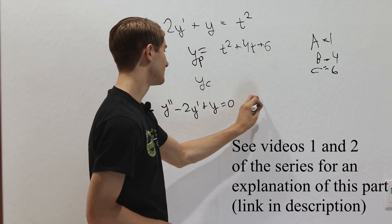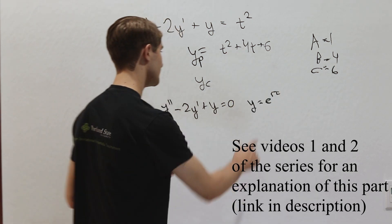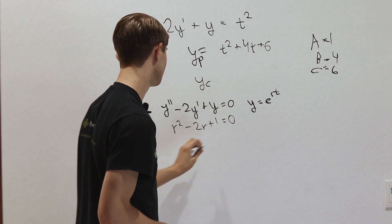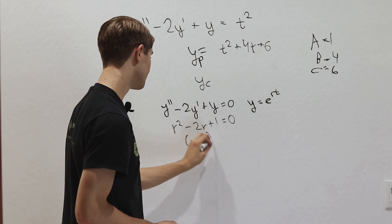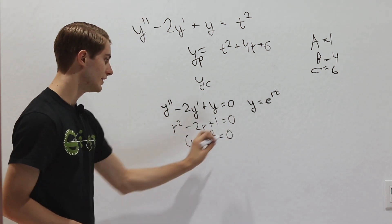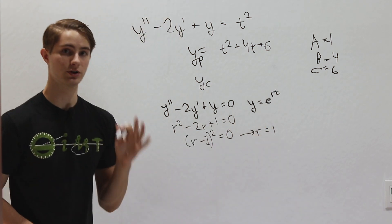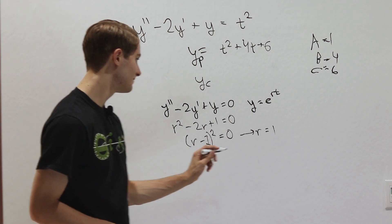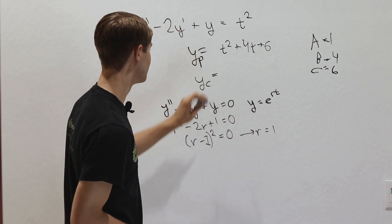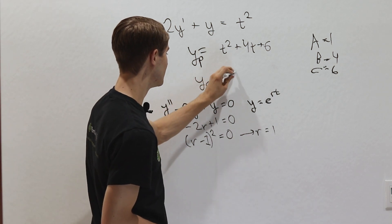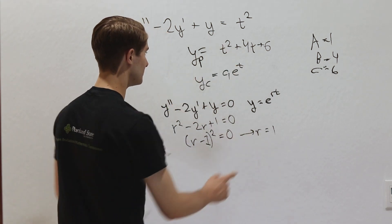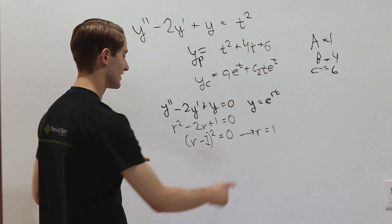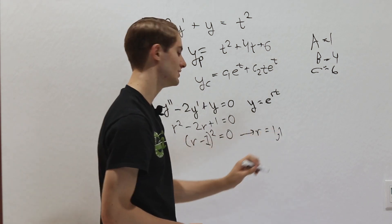This is a standard homogeneous equation. We guess y equals e to the rt, giving characteristic equation r squared minus 2r plus 1 equals 0, which factors to (r minus 1) squared equals 0, giving r equals 1 as a double root. So the complementary solution is c1 e to the t plus c2 t e to the t, where the extra t factor comes from the double root.